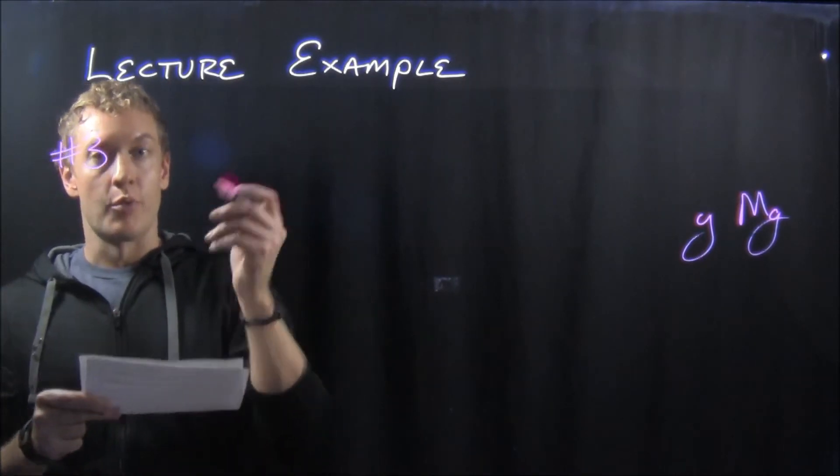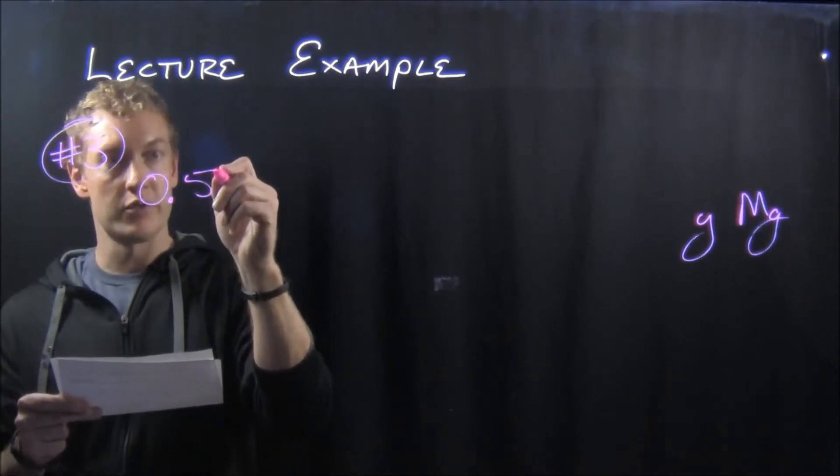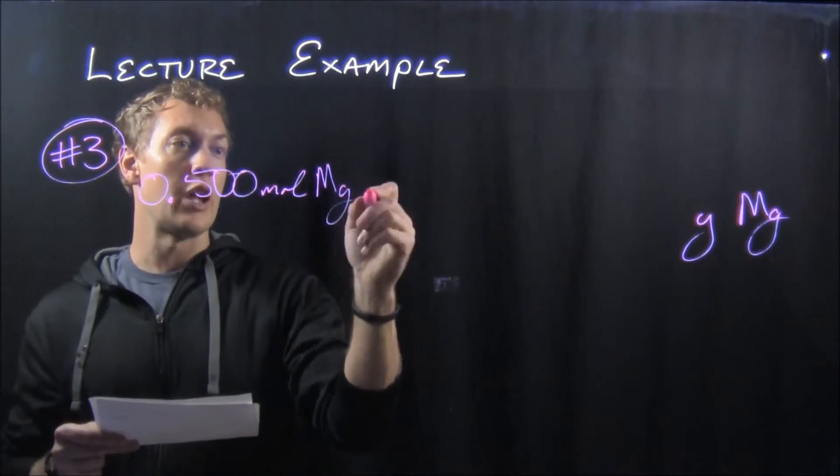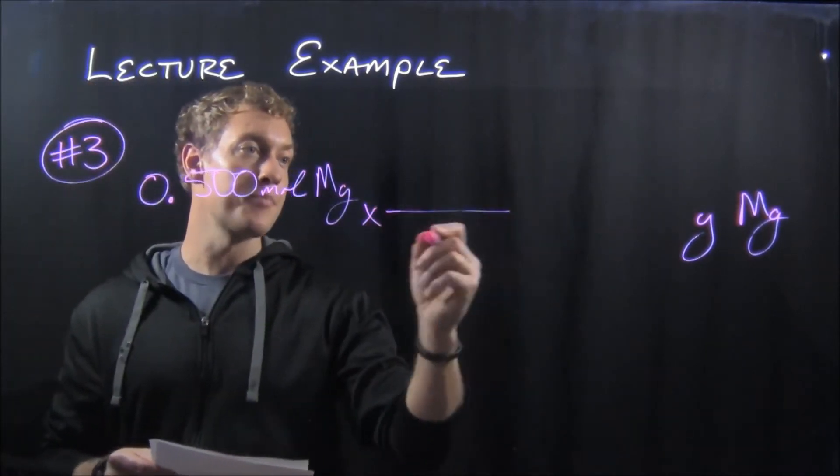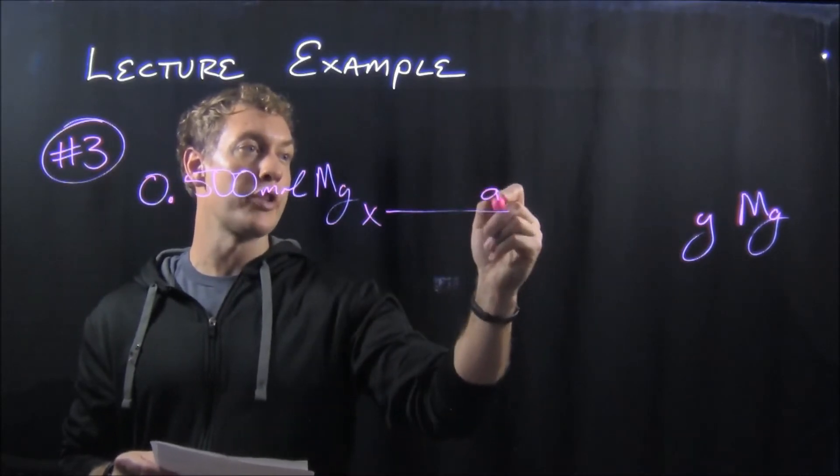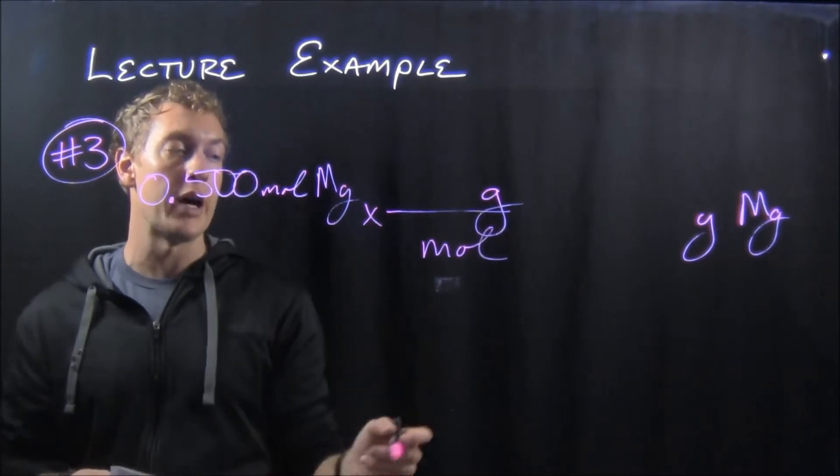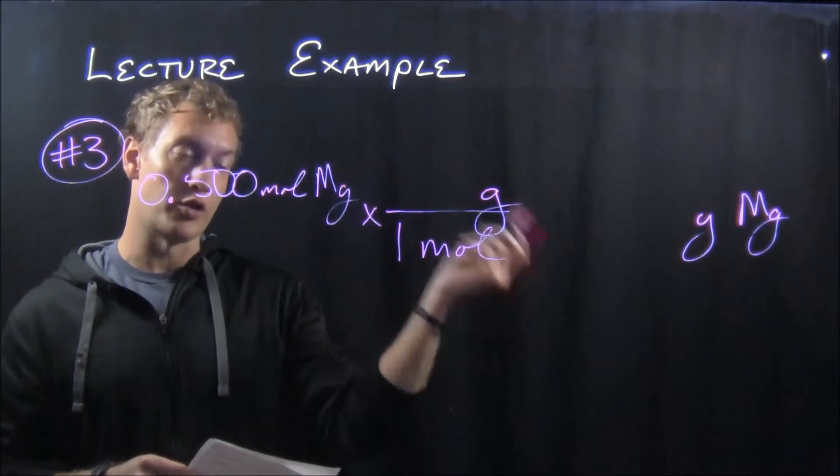We're beginning with moles, so it's 0.500 moles of magnesium, and we want to convert that to grams. We're going to multiply that by - now grams needs to go on the top and mole, which we want to cancel, needs to go on the bottom. We know that one mole has a mass, so you look...